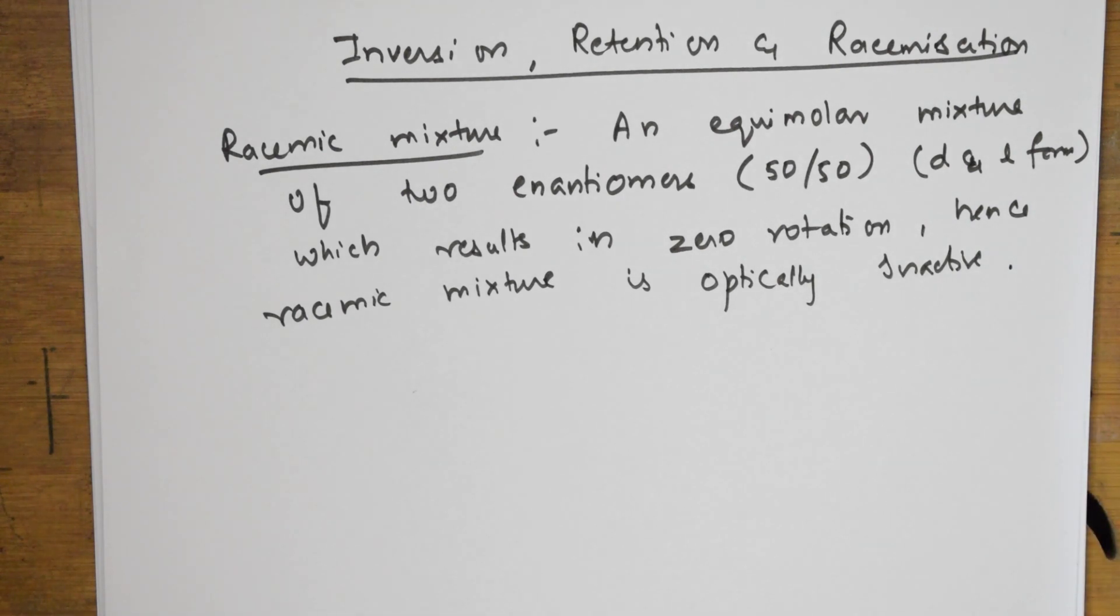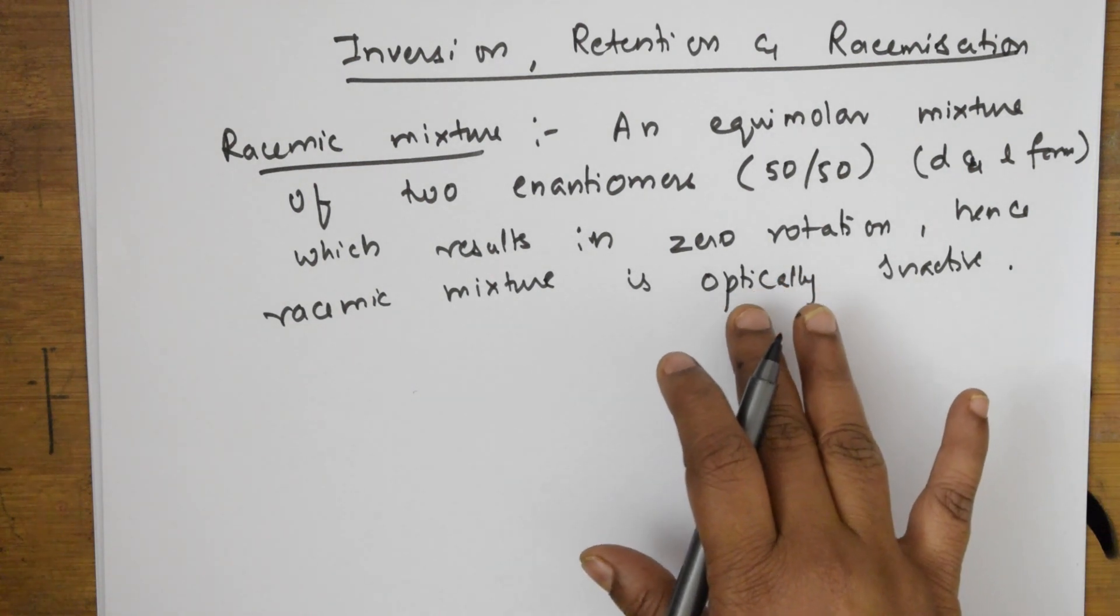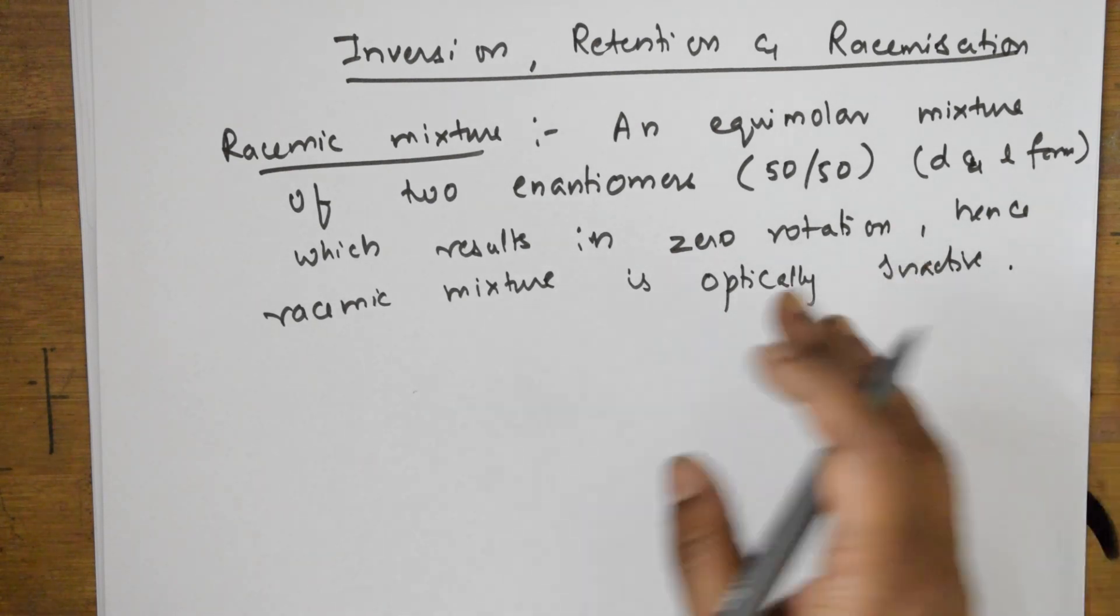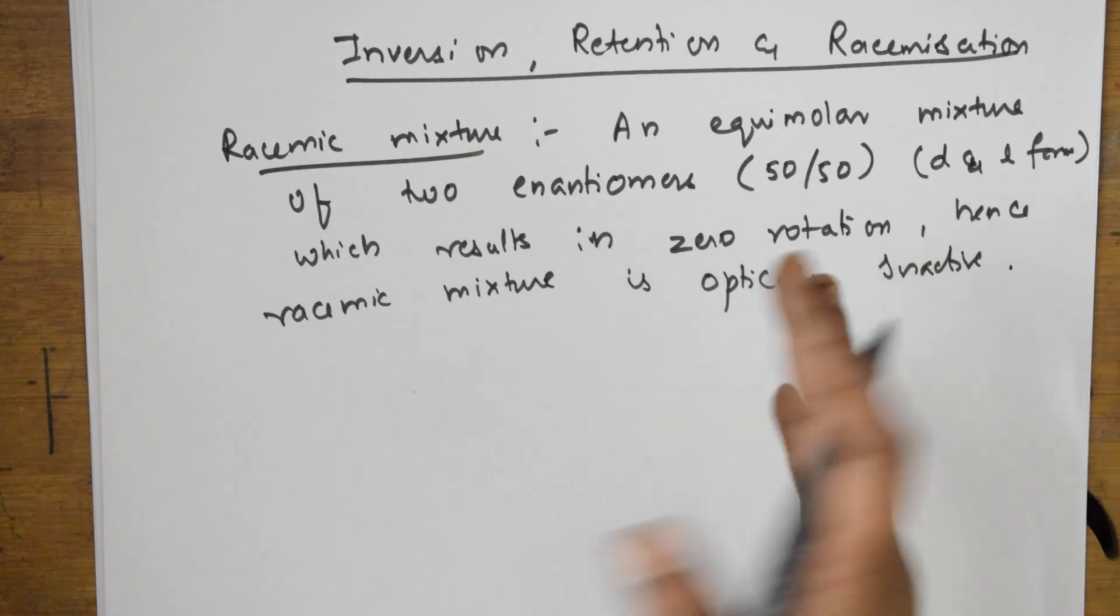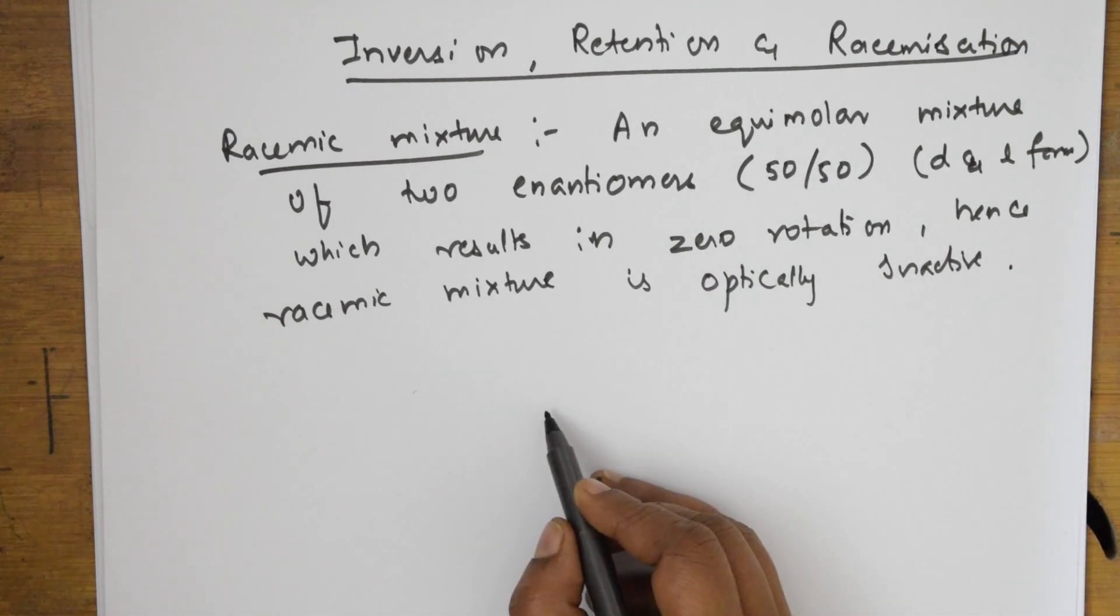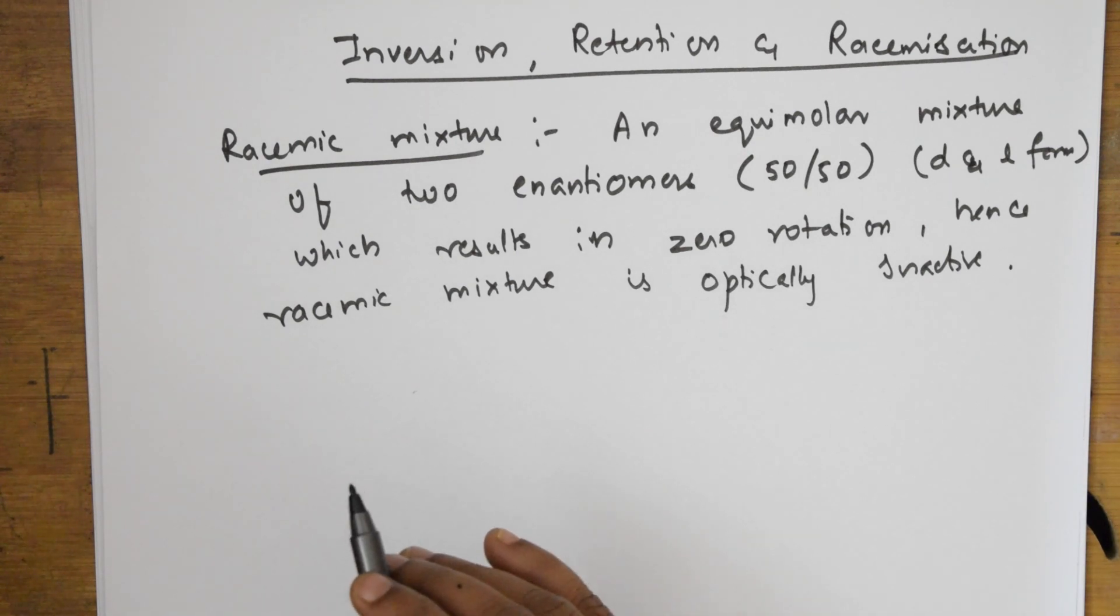Let us take an example. Now we will take an example of inversion and retention, which is an NCERT example, so it is easy for you to understand.